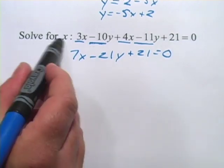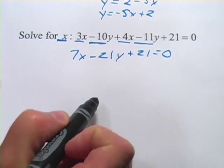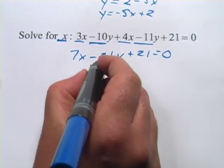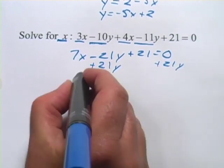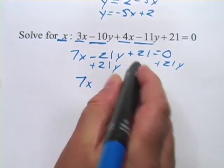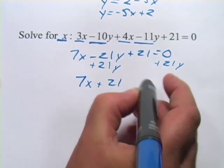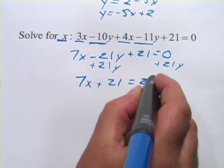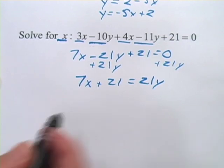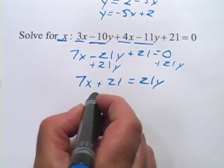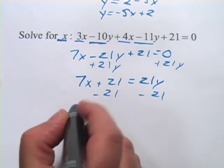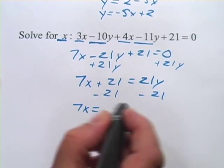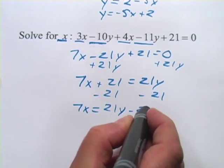And now since I'm solving for x, I want to get everything else over on the other side. I'm going to start by adding 21y to both sides. So that would leave over here 7x plus 21 equals 21y. And then the last thing I need to do is subtract this number, this 21 from both sides. And I get 7x equals 21y minus 21.